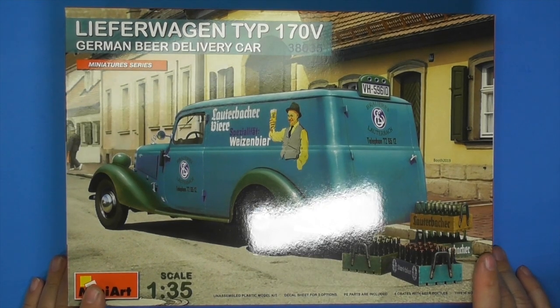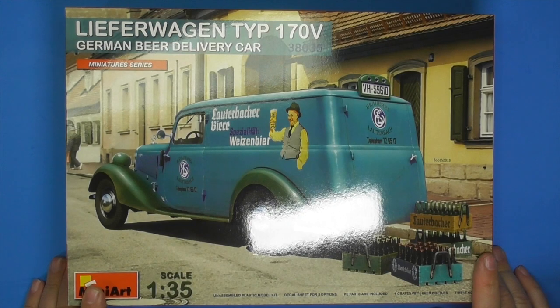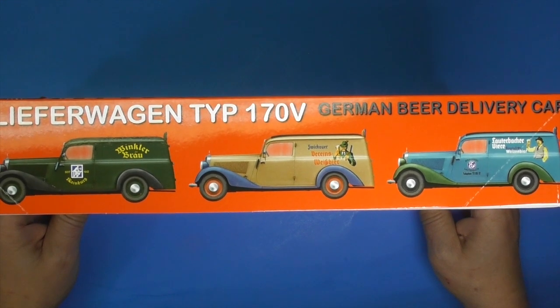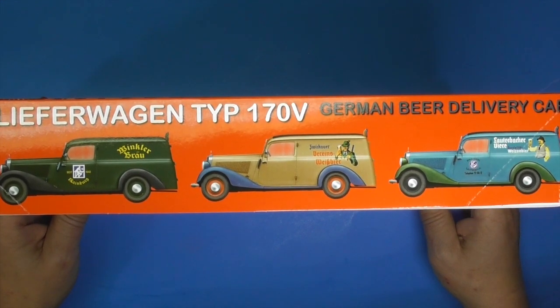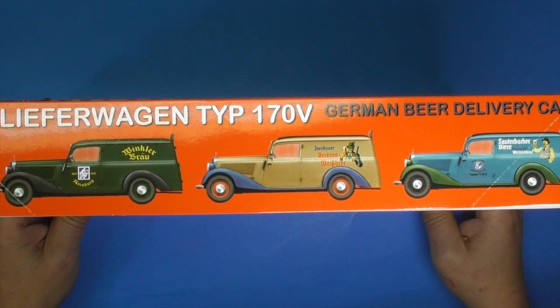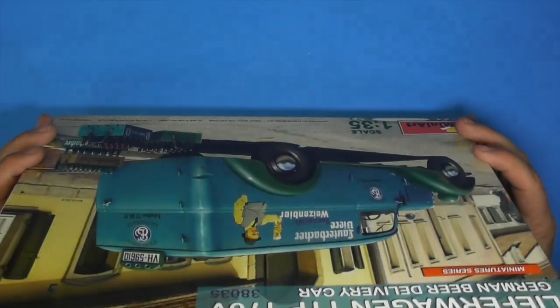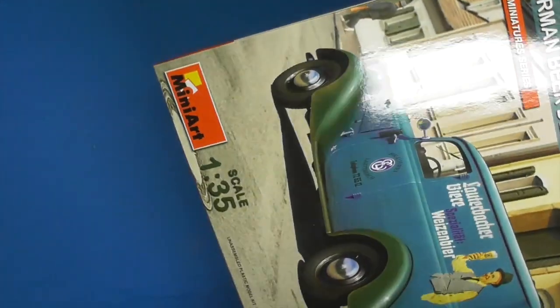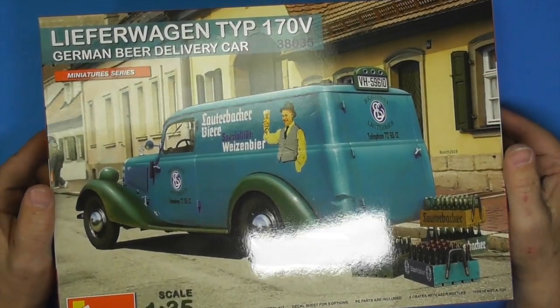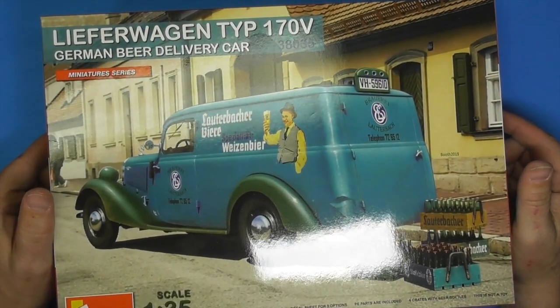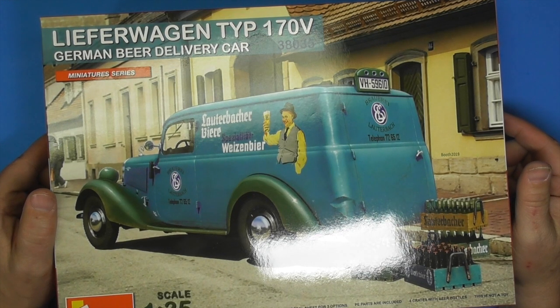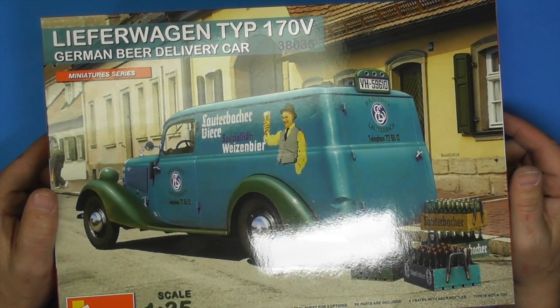This really caught my eye, so I bought three of them because you've got decals for three different schemes, and I can make one brand new, one all raggedy beaten up, and one in between. Might even put one in a World War II diorama. So you've got yourself here a Lieferwagen type 170V German beer delivery car, kit 38035 from MiniArt.